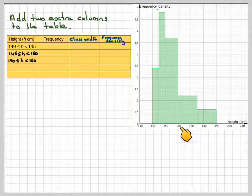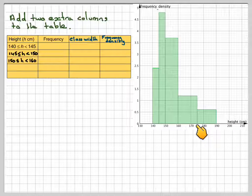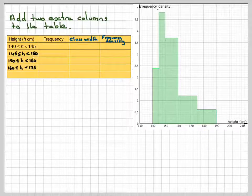And then from 160 to 175, which is there. And then from 175 to 190. So we've got unequal class widths.